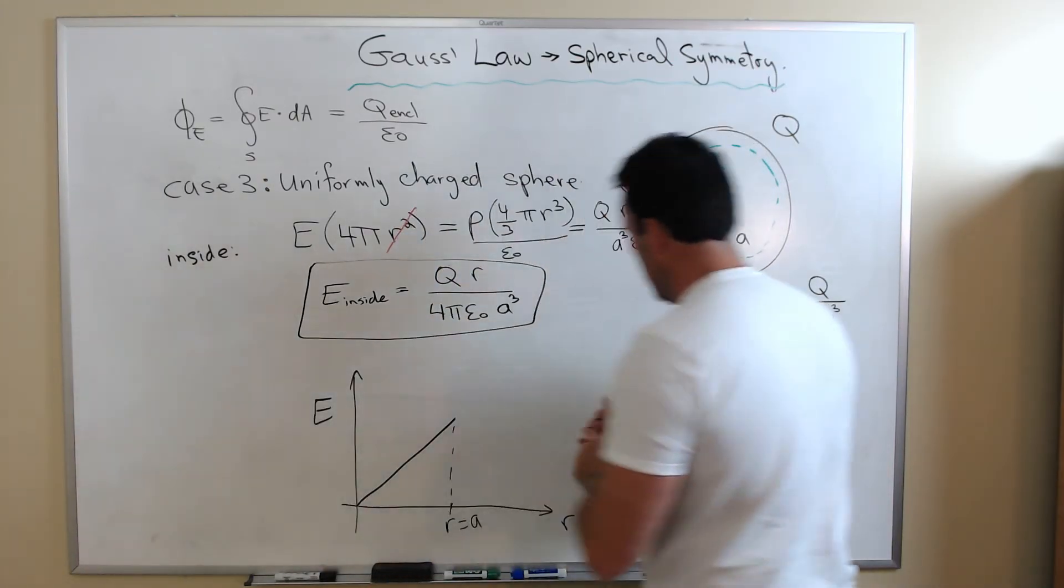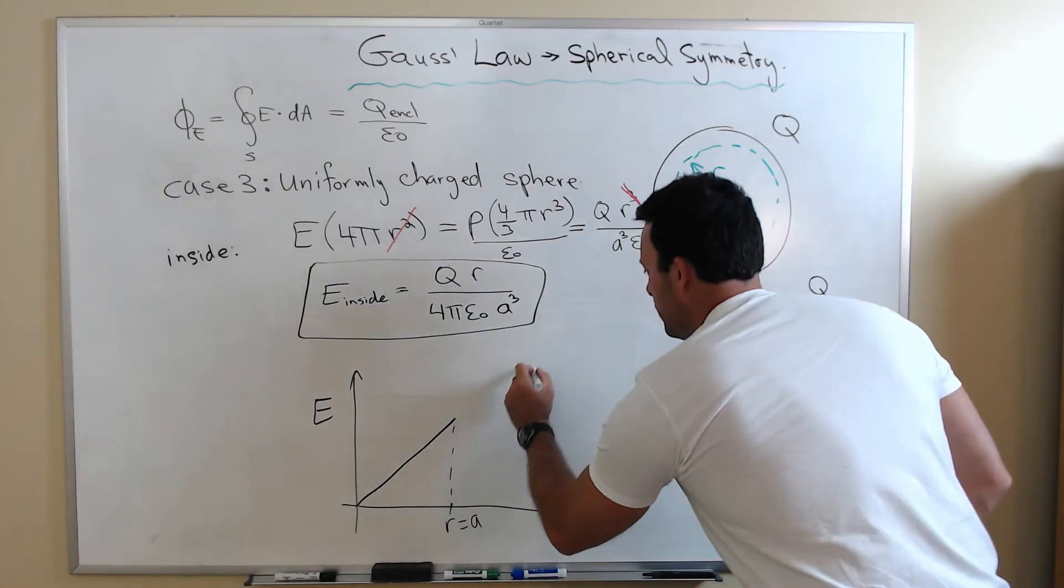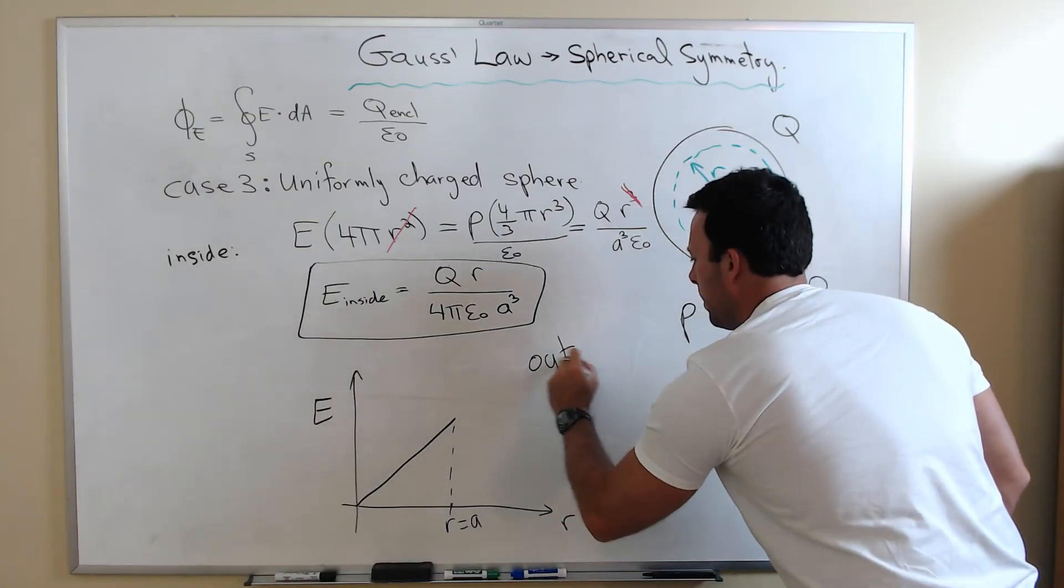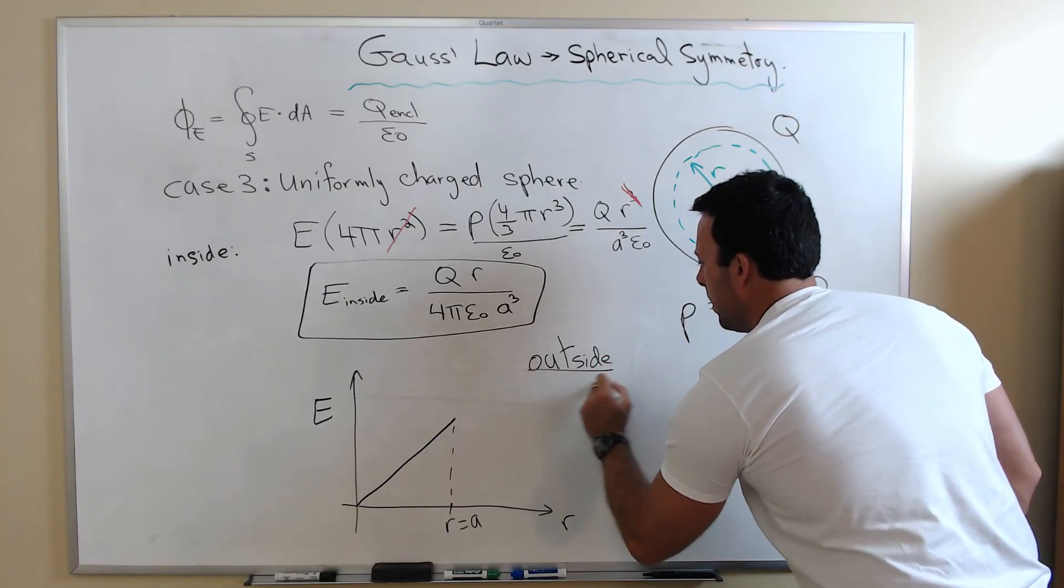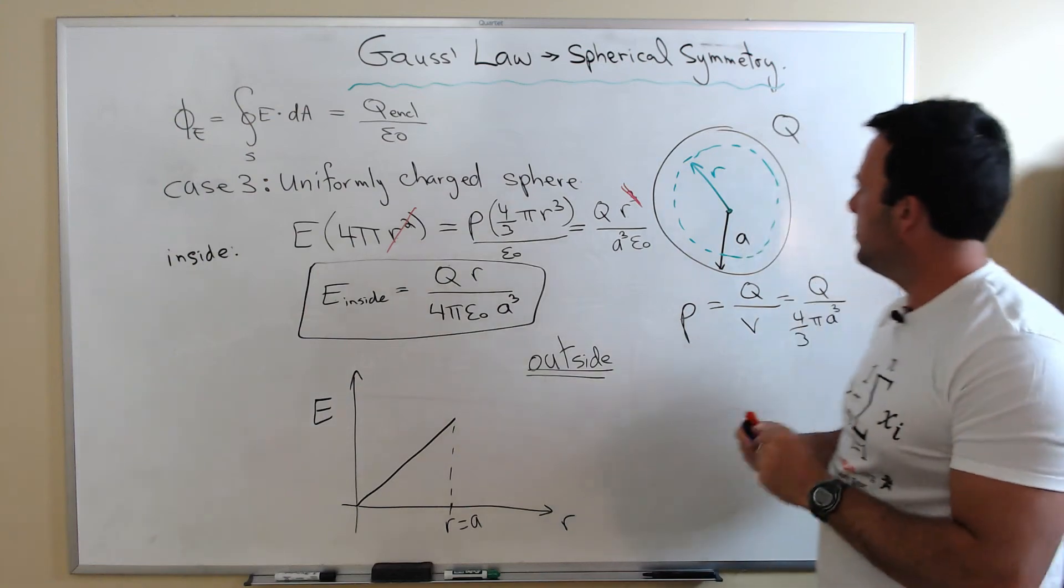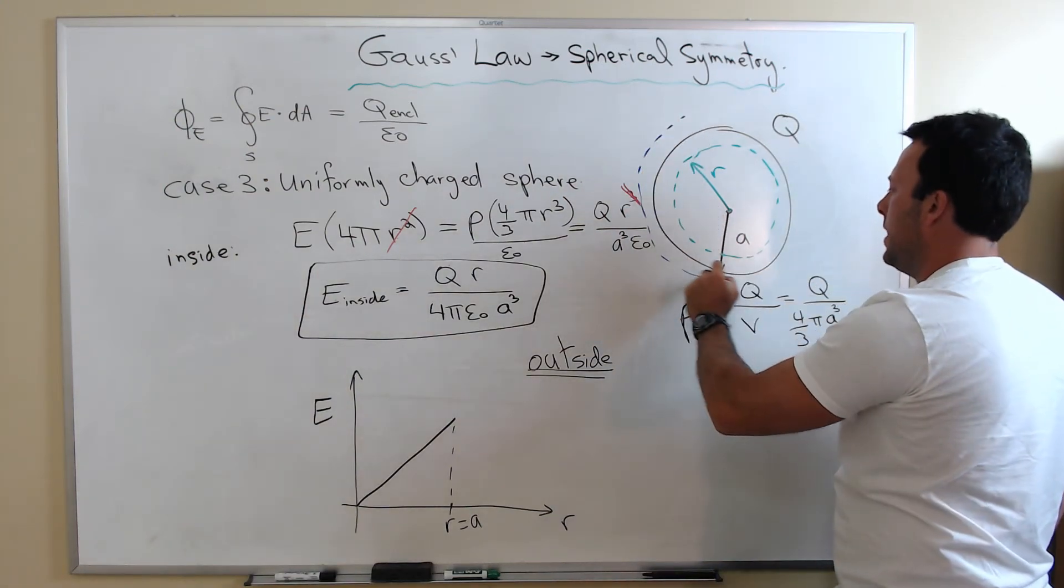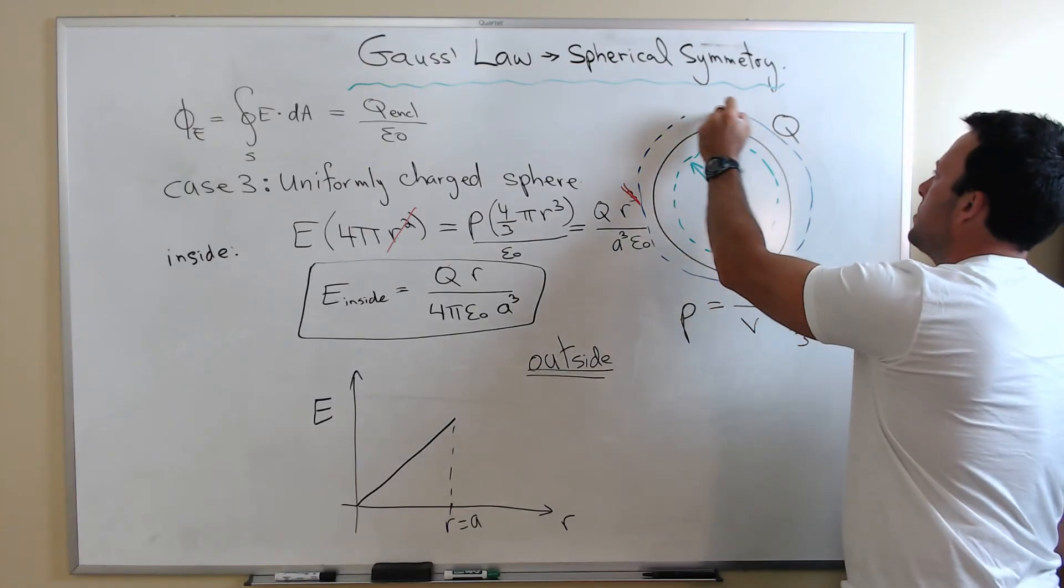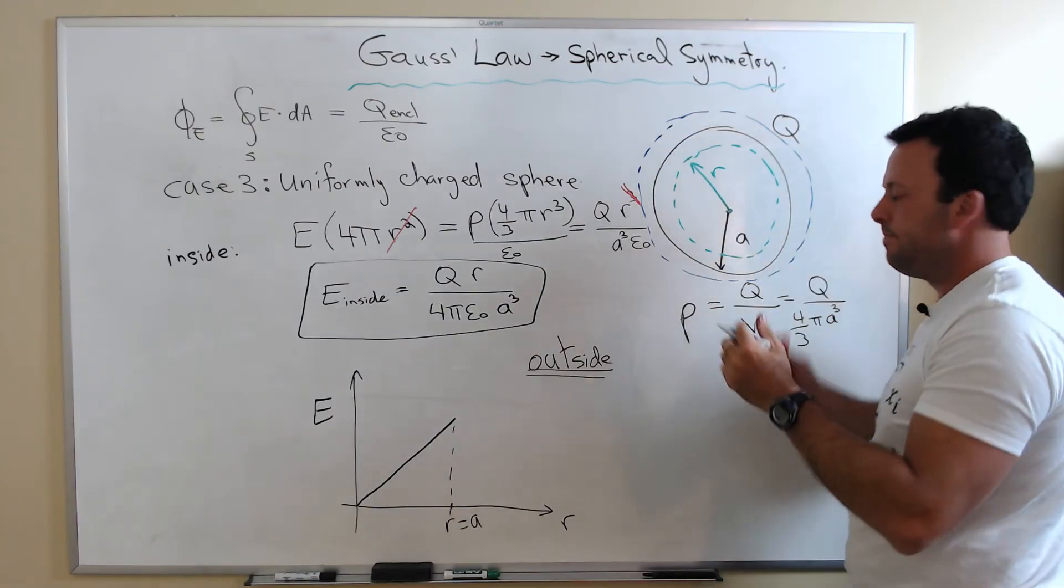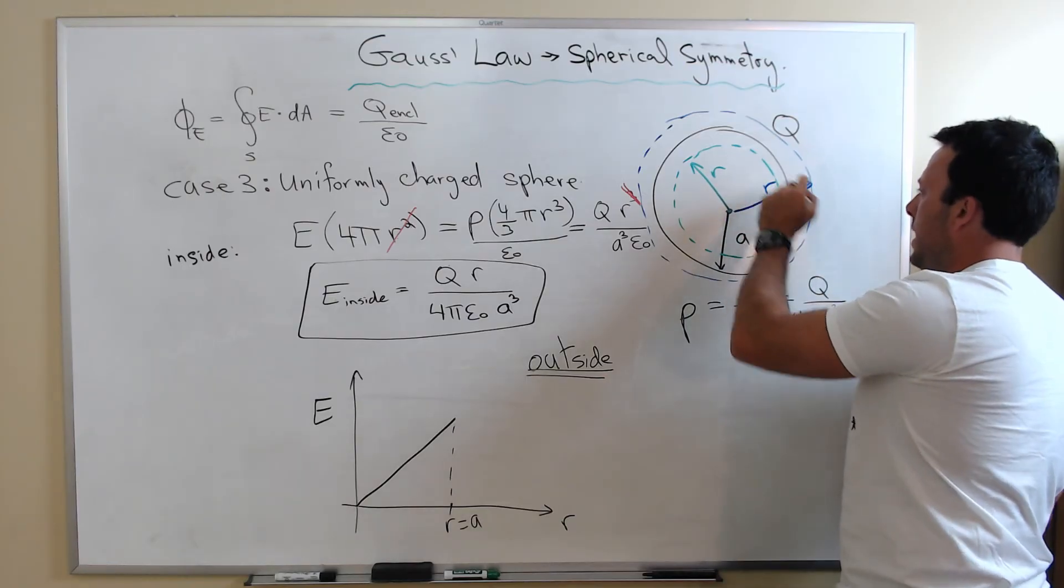Let's apply Gauss's law to the outside. The outside is actually pretty easy. We want to find the field outside. So we have to use a Gaussian surface that is outside or at the point where I want to evaluate it. This is going to have a radius R. Let's apply Gauss's law to this specific problem.